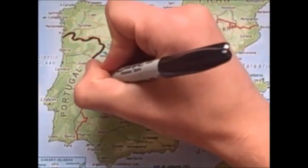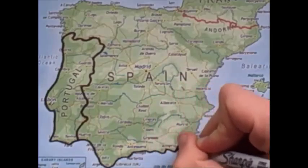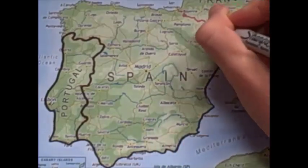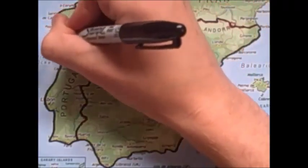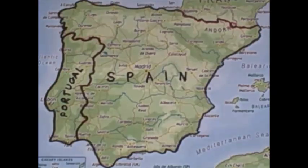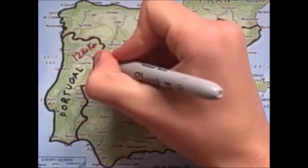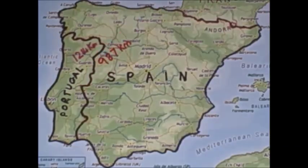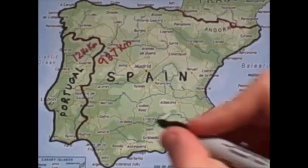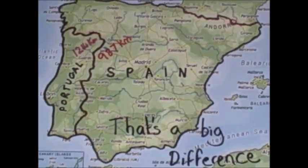Another case of this is the Spanish-Portuguese border. Both have agreed on the path it takes, but the difference in distance is big, like 227 kilometers big. The Portuguese say that the border is 1,214 kilometers long, whereas the Spanish say it's only 987 kilometers long. It's the same idea that they looked at it on different scales and so the Portuguese measured it more accurately.